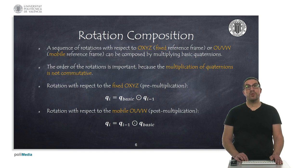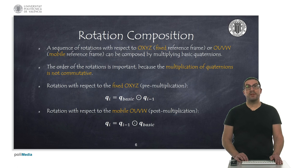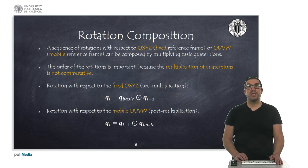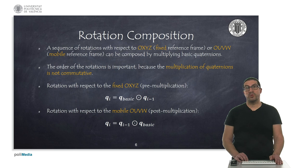If we perform the rotation with respect to the fixed reference frame, we must pre-multiply the basic rotation with the current orientation defined by a quaternion in the previous iteration to obtain the quaternion after the new rotation. Similarly, if we perform the rotation with respect to the mobile reference frame, the operation required is the post-multiplication between quaternions. The order of multiplication between quaternions is important, as it was in the case of rotation matrices, since this quaternion multiplication operator is not commutative.